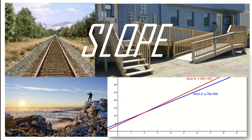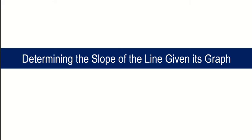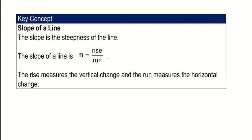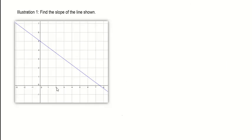But how do we determine the slope of the line? Let us define it and have some examples. The slope is the steepness of the line. It is determined by getting the ratio of the rise and the run. The rise measures the vertical change and the run measures the horizontal change.